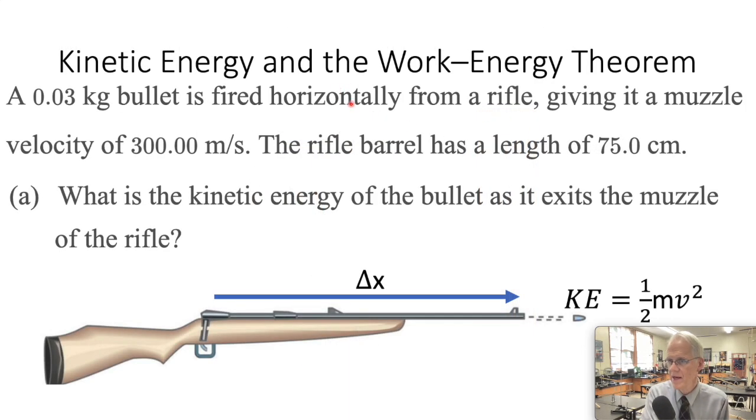So let's try an example. Let's say we have a 0.03 kilogram bullet fired horizontally from a rifle, giving it a muzzle velocity of 300 meters per second. The rifle barrel has a length of 75 centimeters.